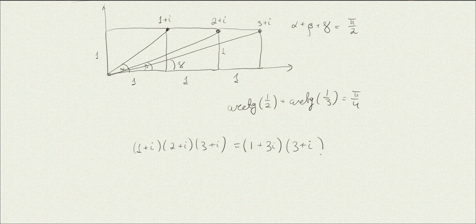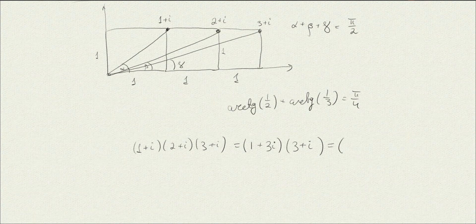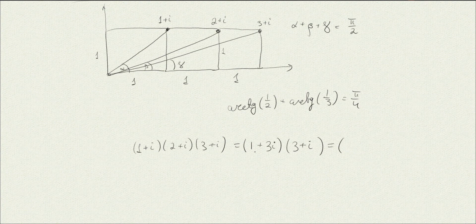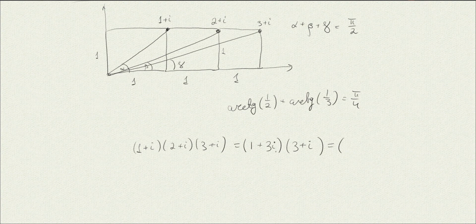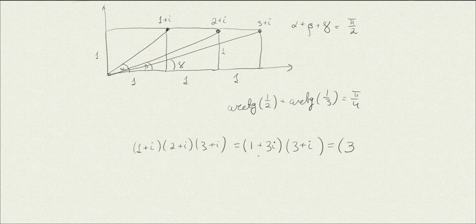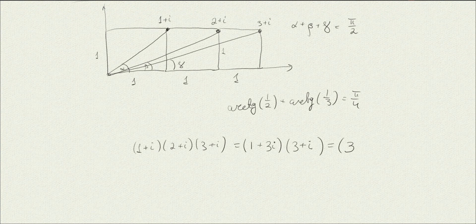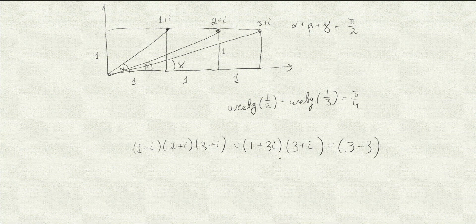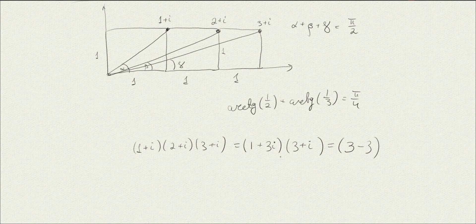Now, actually, we can see right from here that this number is going to be purely imaginary, but let's go on with the computation. So it's 3 times, 1 times 3 is 3, and minus 3i squared is actually minus 3, that's the real part, and the real part, as we can see here, is 0.